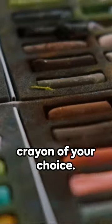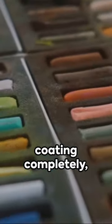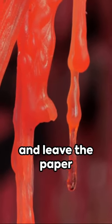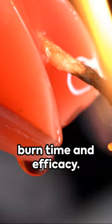Step 1. Start with a crayon of your choice. Remove the paper coating completely, leaving just the wax. You can experiment and leave the paper on a second candle to see how it affects burn time and efficacy.